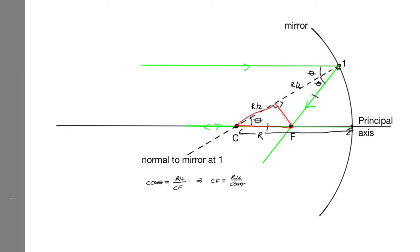Now, we're only going to consider the limit where theta is small. So if theta is small, then we've got cos theta is approximately equal to 1, which tells us that CF is approximately equal to r over 2.